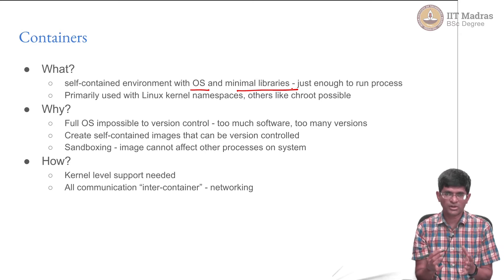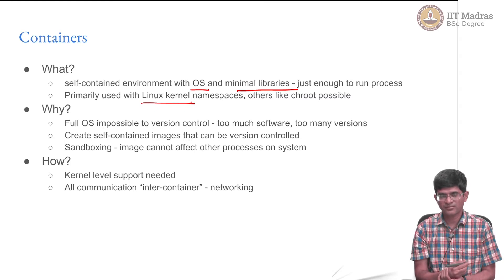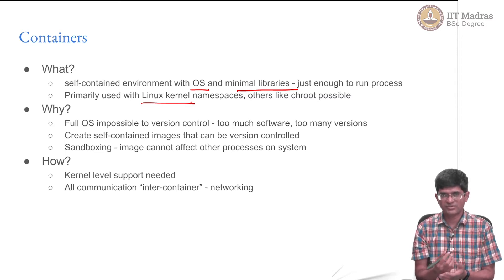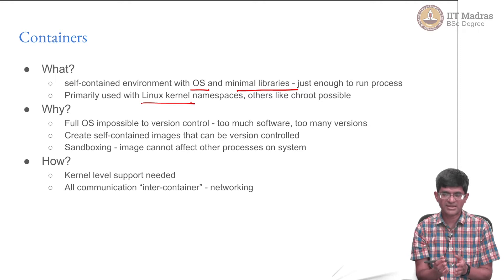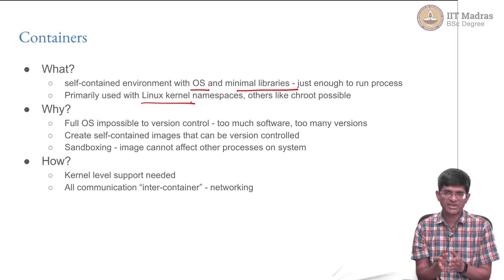A container is supposed to have less impact on the resources of the system, and the way that is achieved is it is primarily used with something like the Linux kernel. The Linux kernel has a facility called control groups, where they define something called namespaces, meaning that each process has a namespace associated with itself. What that namespace means is that when a process refers to any system calls, library functions, or tries to access the file system or any other resource, the operating system knows it is coming from that particular process and can prevent it from affecting any other processes.